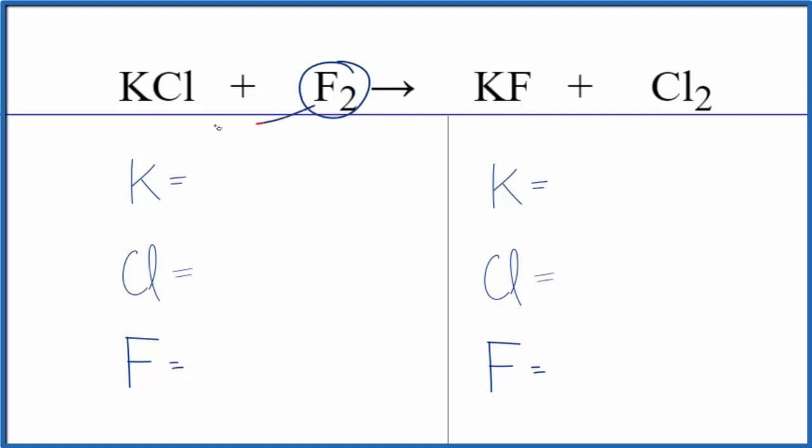The fluorine atoms push the chlorine out, and we have the chlorine all by itself. Then the fluorine is with the potassium. So this is a single replacement, single displacement reaction.